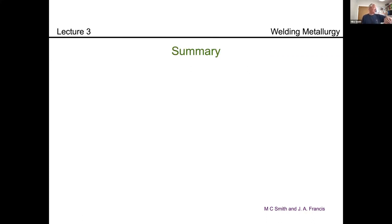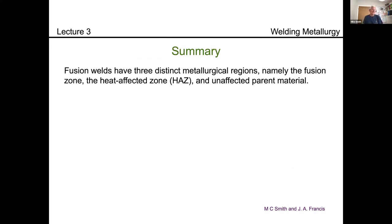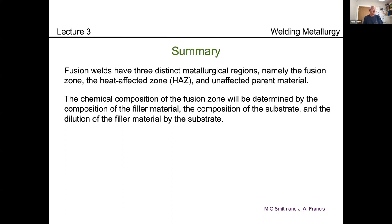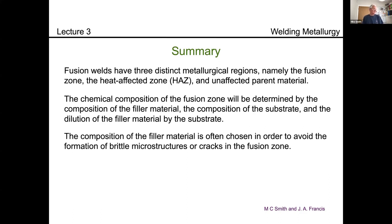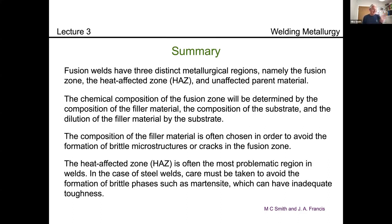To summarize: there are three distinct metallurgical regions in a weld — the fusion zone, the heat affected zone, and unaffected parent material. The chemical composition of the fusion zone is determined by the filler metal composition, the substrate composition, and the dilution. You choose the filler composition to avoid brittle microstructures in the fusion zone. The HAZ is often the most problematic region; in a steel weld you must take care to avoid brittle phases like martensite, which can have inadequate toughness.